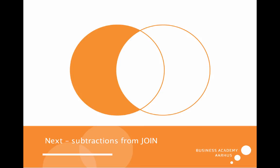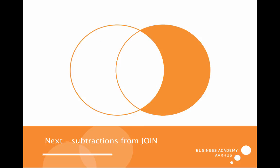Next I will talk about subtractions from a join. That means if I want the left side but without anything in the middle, or the right side without anything in the middle, or a full outer join without anything in the middle.